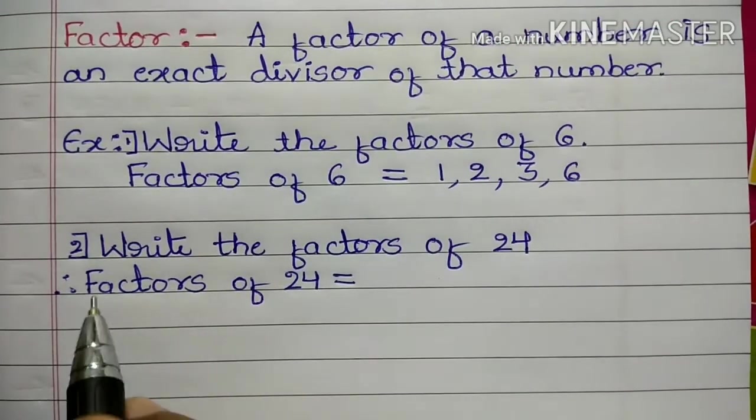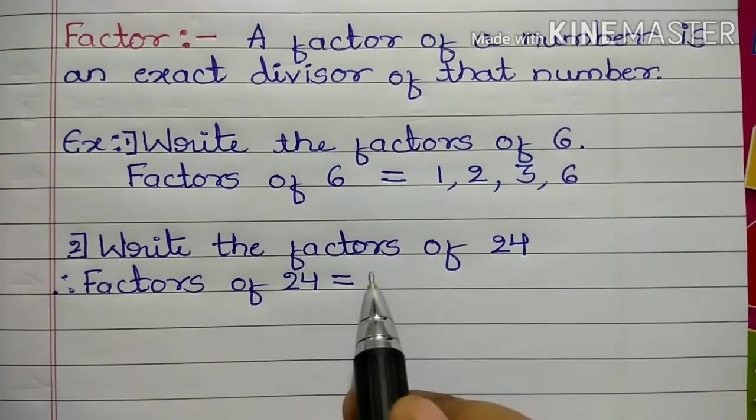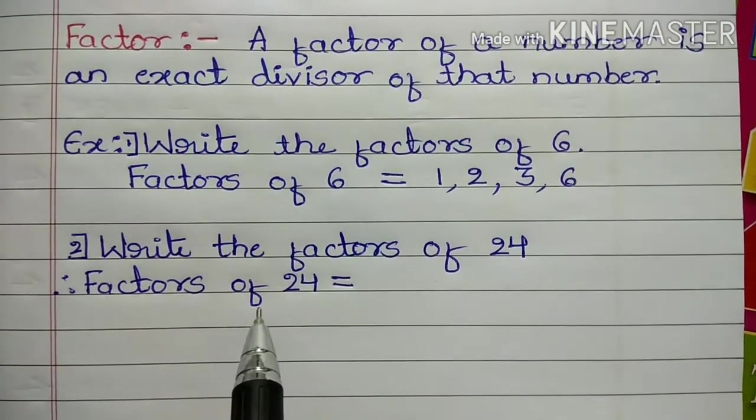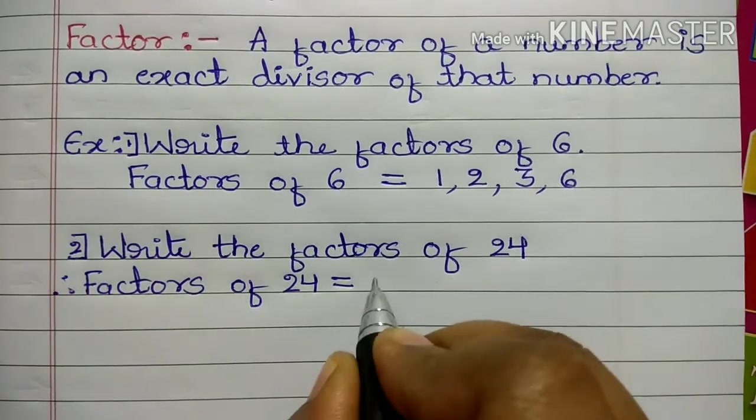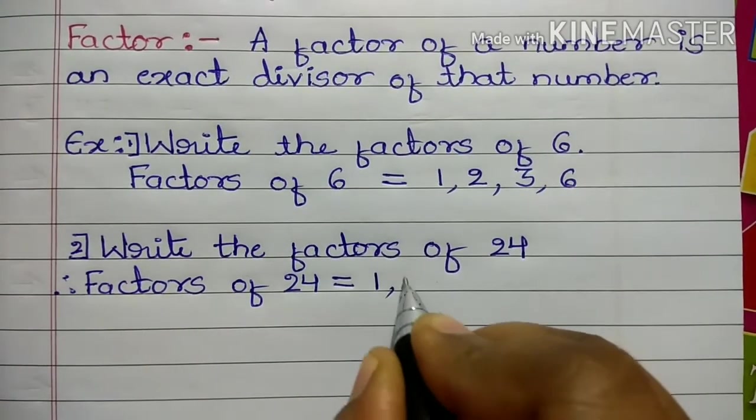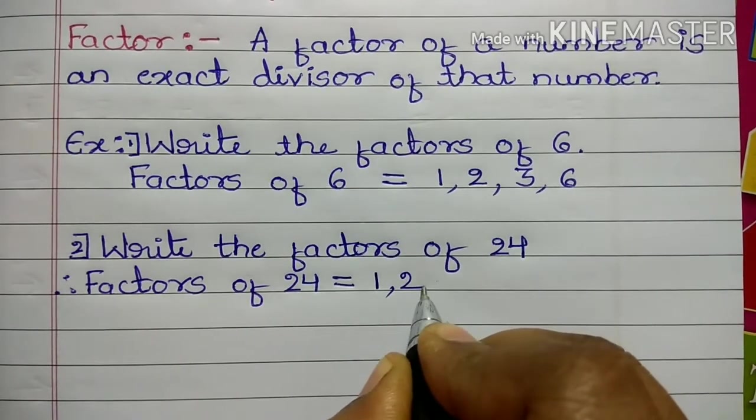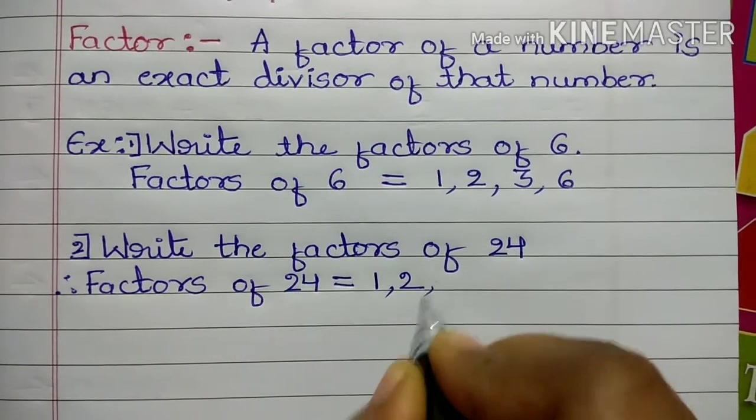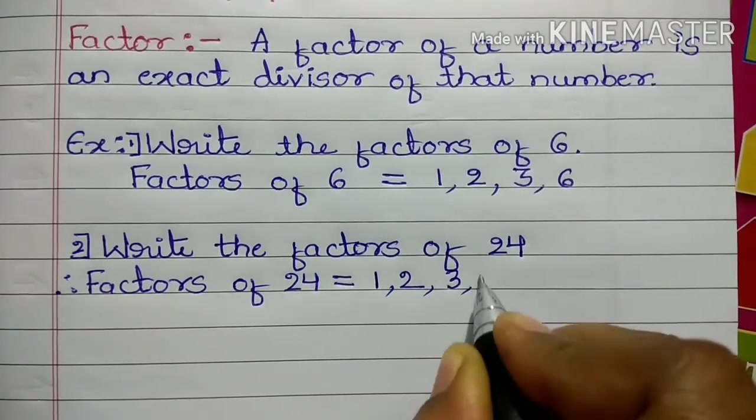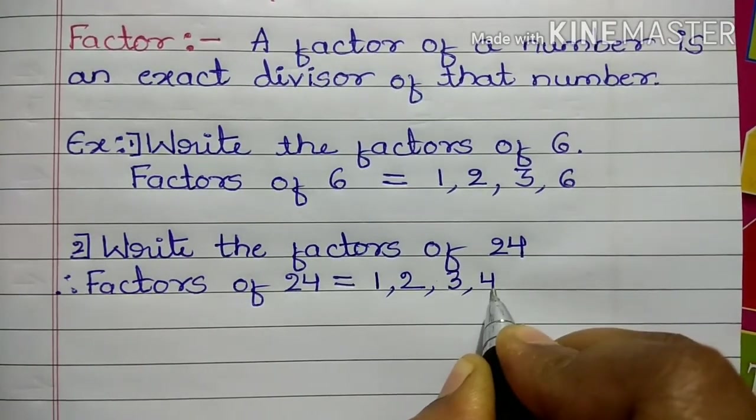Example 2: Write the factors of 24. Factors of 24 are: 1 times 24 is 24, 2 times 12 is 24, 3 times 8 is 24, and 4 times 6 is 24.